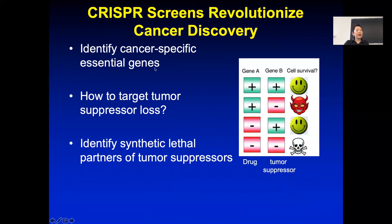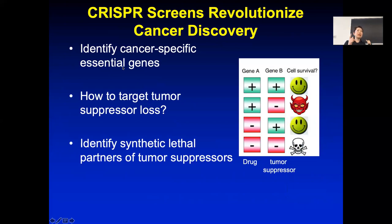You can use CRISPR screens to identify cancer-specific essential genes. Some genes are pan-lethal—knocking them out kills any cell, like cutting off the head. Those are not good drug targets. What you want are genes that are uniquely essential in some cancer cells but not normal cells. Recently, large papers from the Broad Institute and the Sanger Institute have reported CRISPR screens across 300–500 cell lines to identify genes that are occasionally really important in some contexts but not others.